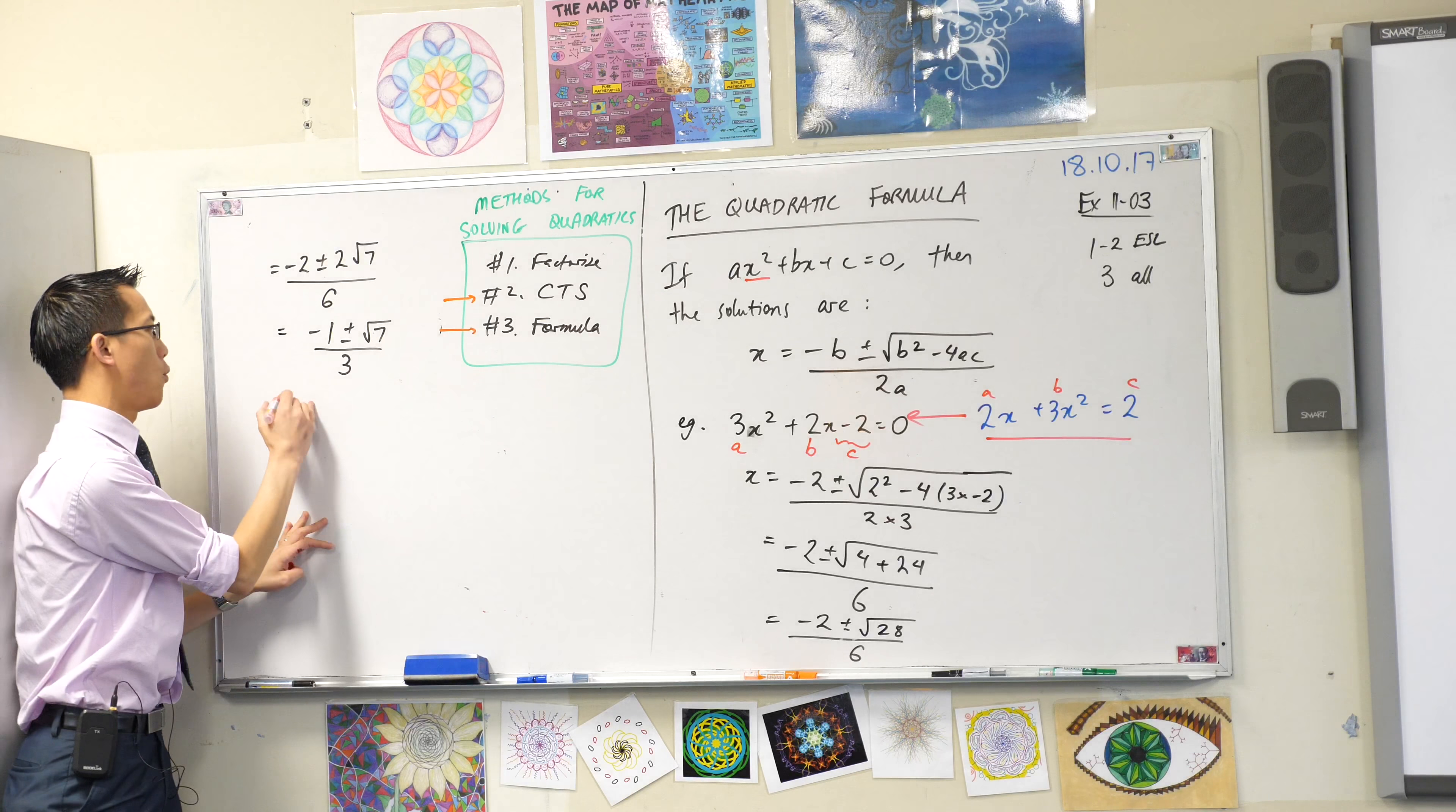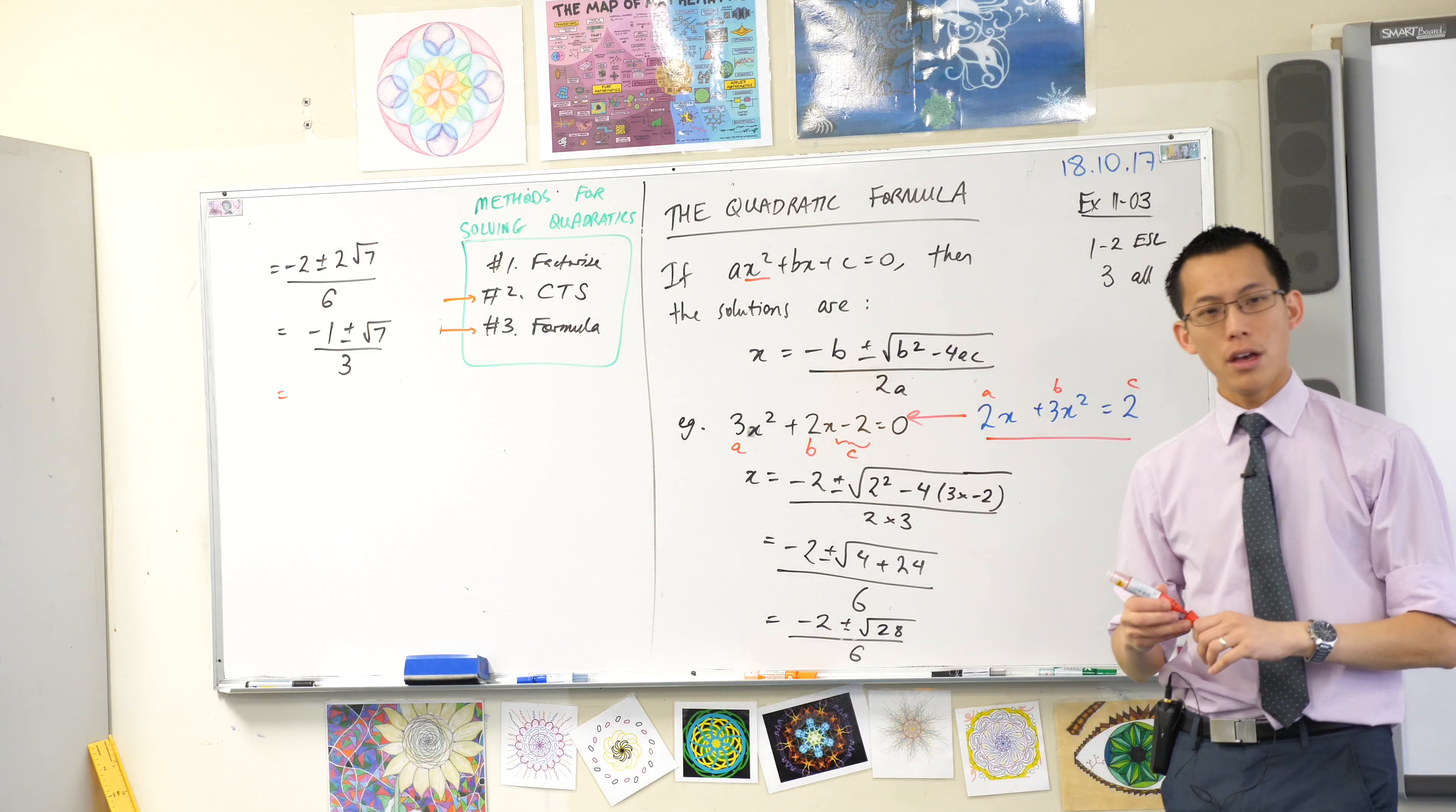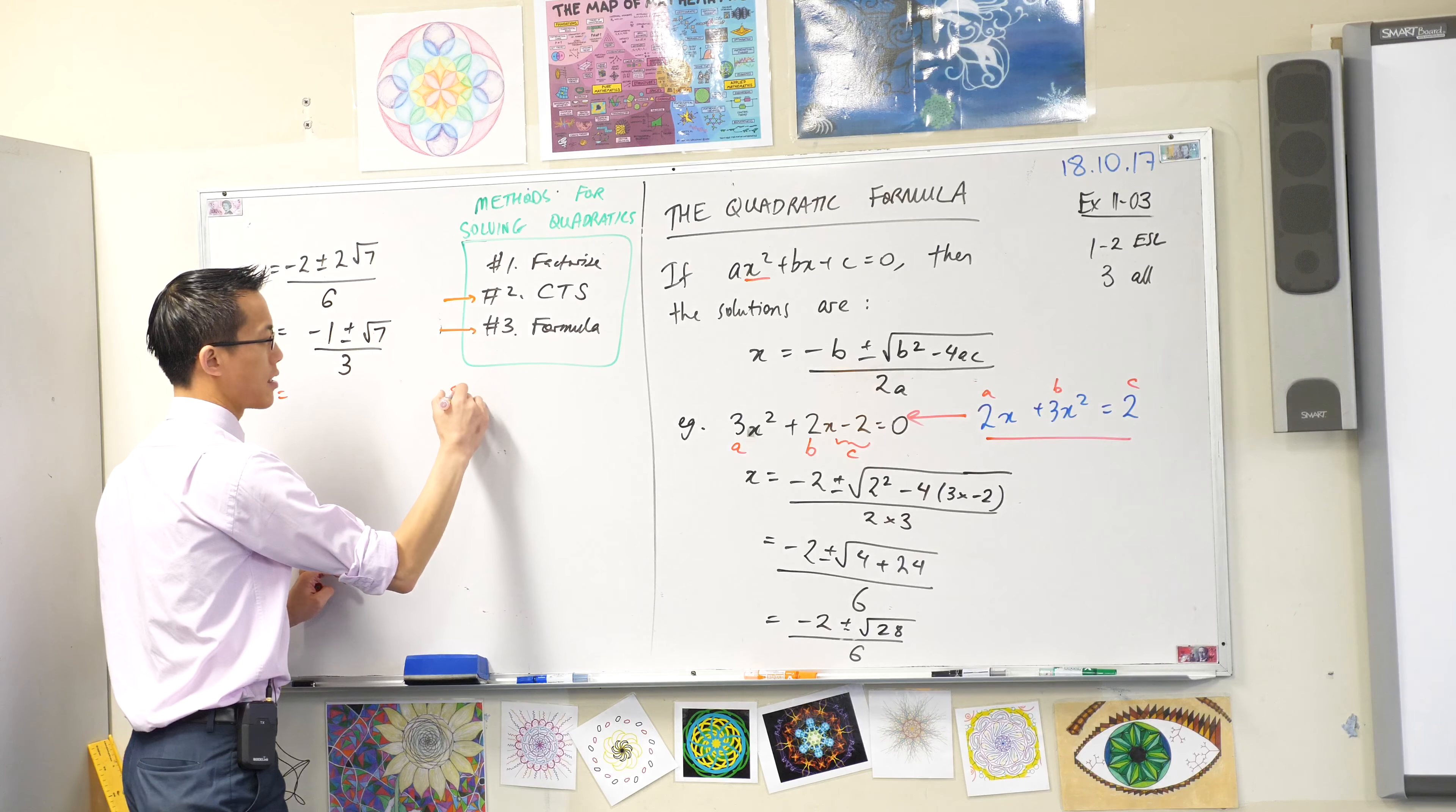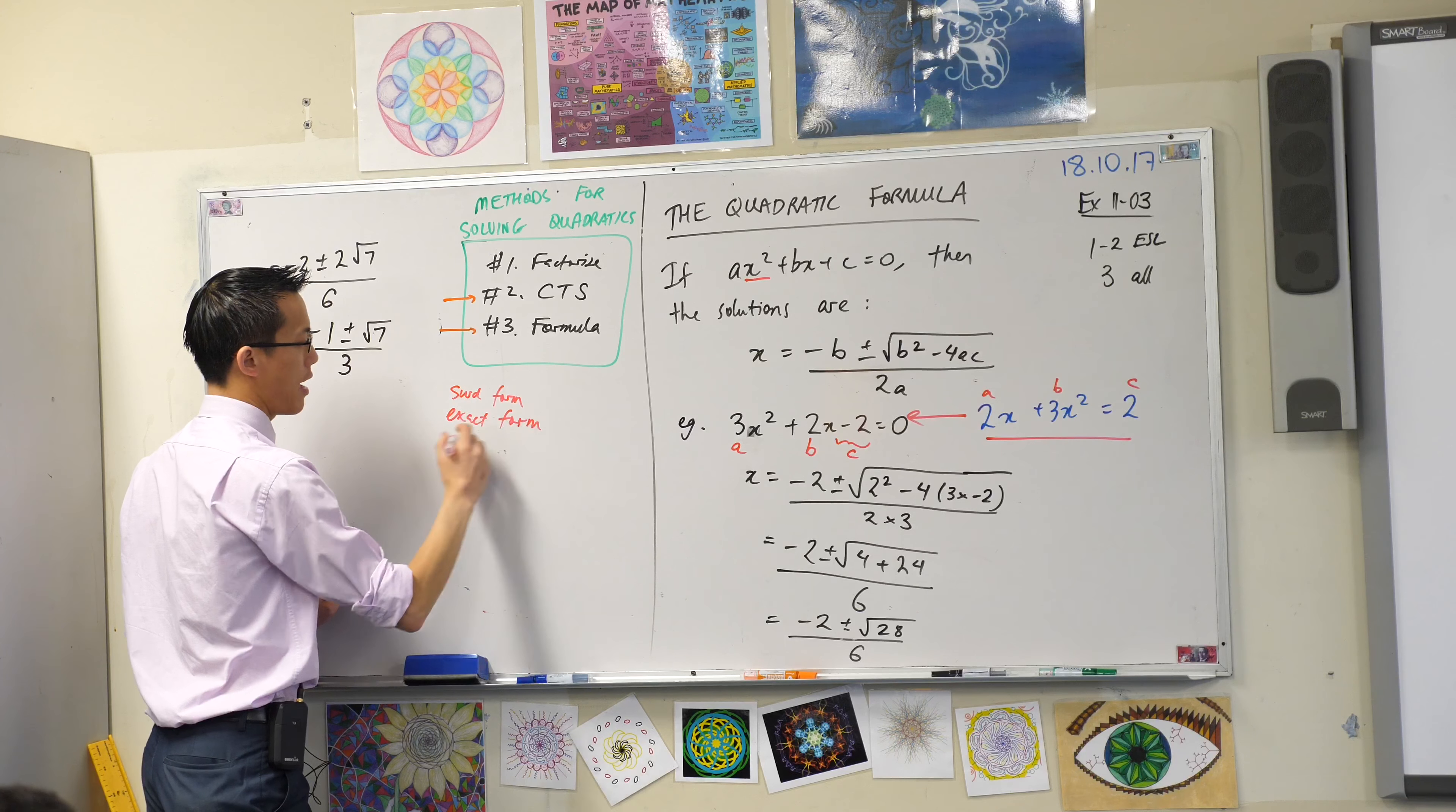That's the first thing everyone needs to know. The second thing everyone needs to know is, when you get to this point here, suppose you get to your answer, am I done? So I want you to write the following three phrases underneath this answer: surd form, exact form, and approximate.